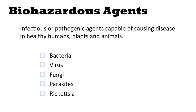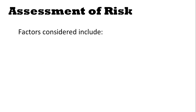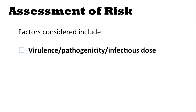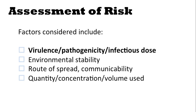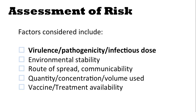So what is a biohazardous agent? These are infectious or pathogenic agents capable of causing disease in healthy humans, plants, and animals. Assessing risk of those organisms includes factors such as the virulence, pathogenicity, or infectious dose. But you also want to consider the environmental stability — how well and for how long it will survive in a laboratory environment — its route of spread and communicability, how it would spread if released, the quantity, concentration, and volume being used in the experiments, and whether there are vaccines or treatments available. It's also important to consider the allergenicity.